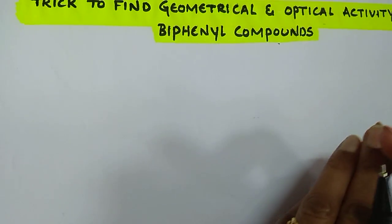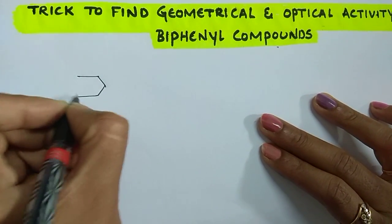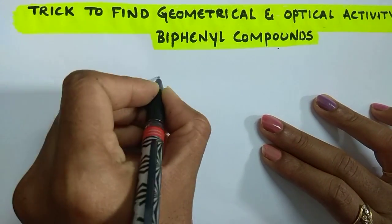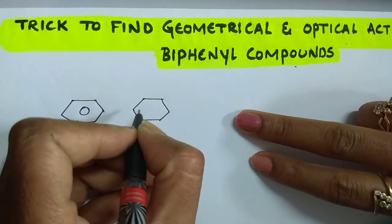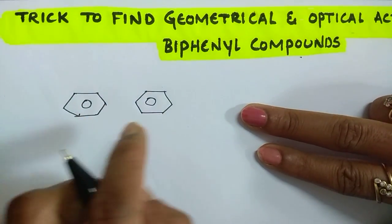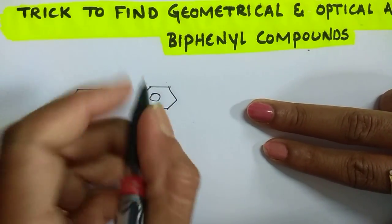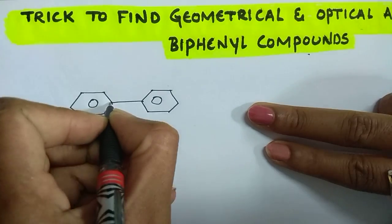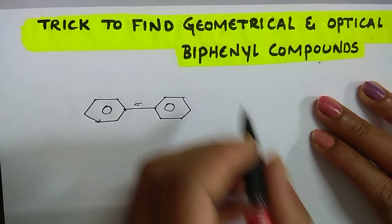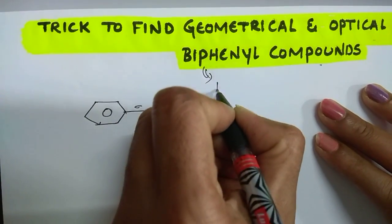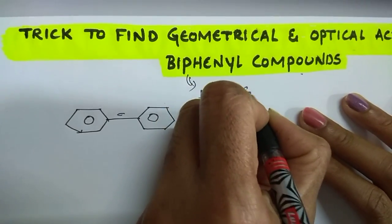What are biphenyl compounds? Biphenyl compounds are compounds in which there are two benzene rings. This is one benzene ring and this is another benzene ring. When these two benzene rings are present, one sigma bond is present between them. This is called a biphenyl compound. These are also called diphenyl compounds.